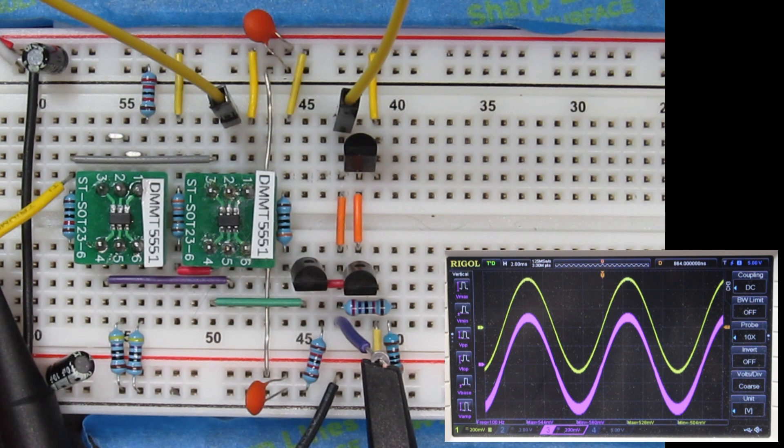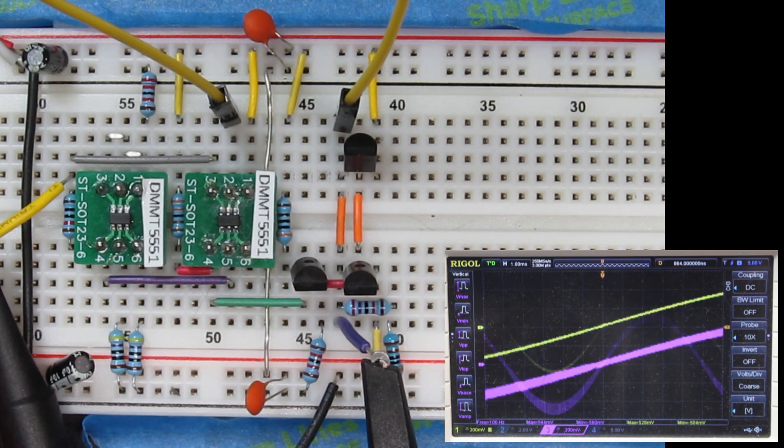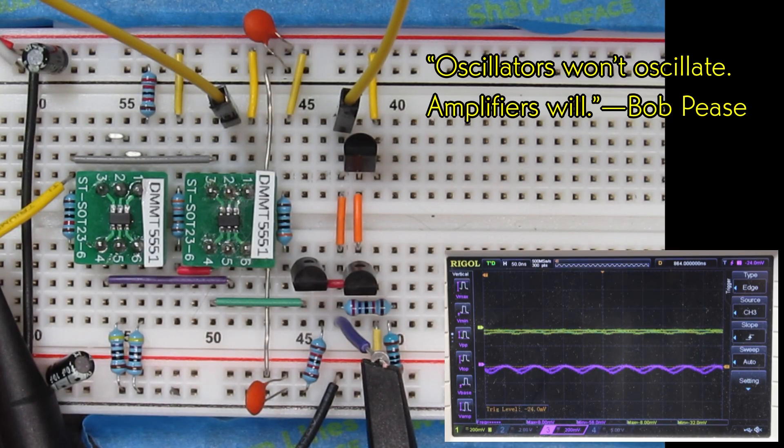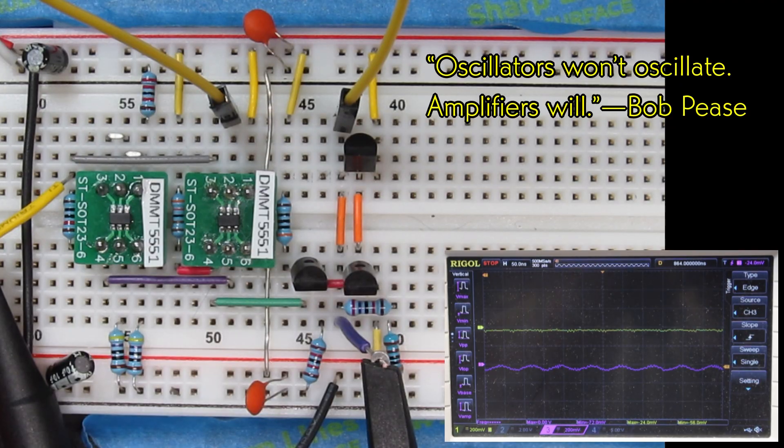But not all is well with the world. That bottom trace is thick. There's some sort of spurious high-frequency signal on it. If I zoom in on this signal, both horizontally and vertically, I have to zoom in quite a way. But our circuit is oscillating at about 13 MHz, with an amplitude of a tenth of a volt or so. Unfortunately, that's all I have time for in this episode.